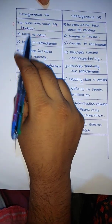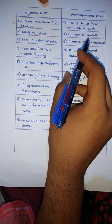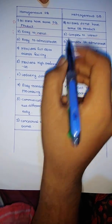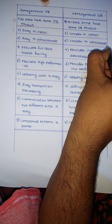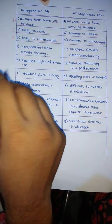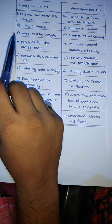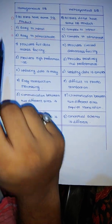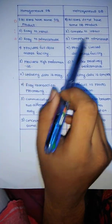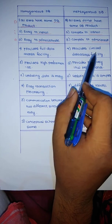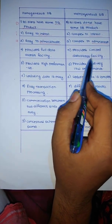Administration is easy in a homogeneous database, while administration in a heterogeneous database is complex. So the keyword here is administration — that is A. Next, a homogeneous database provides full data access facility.